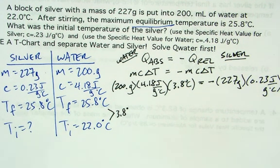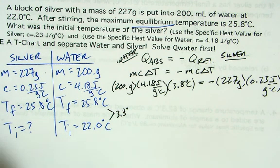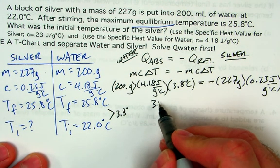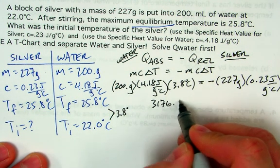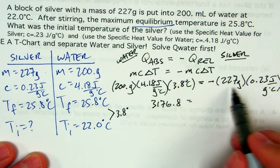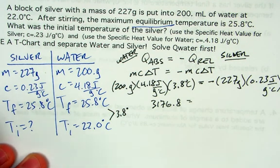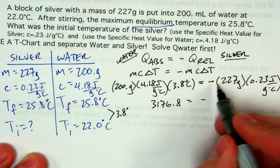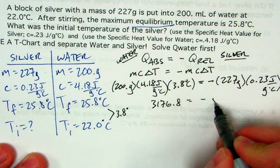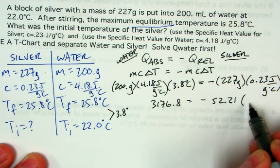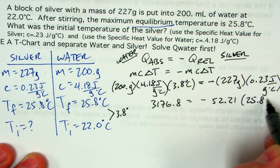Everything on the left-hand side is a known number, so we calculate 200 times 4.18 times 3.8, which gives 3176.8. On the right side, we multiply 227 times 0.23, and bringing in the negative sign, we get negative 52.21 times the quantity (25.8 minus T-initial).